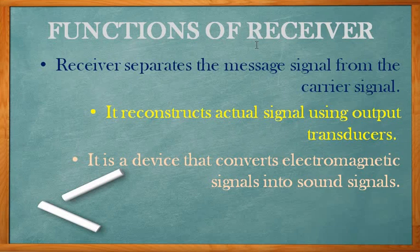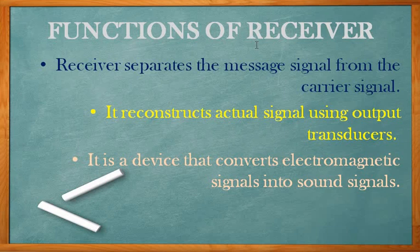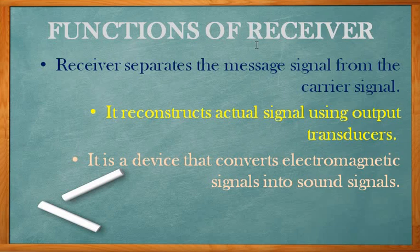The three important functions of the receiver are: it separates the carrier and the message signal; it reconstructs the original signal using output transducers and converts electromagnetic signals into sound signals; and finally it raises the message signal obtained after demodulation to a power level sufficient to operate at the output side — amplifying the original message signal to match the level required at the receiver output.